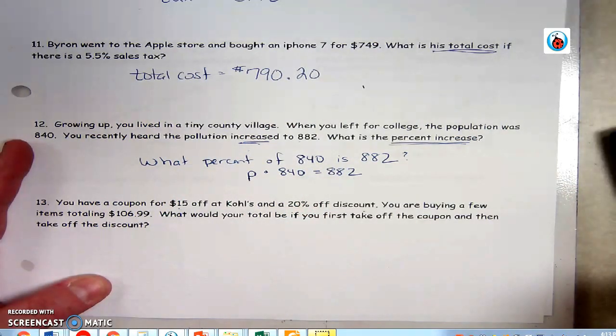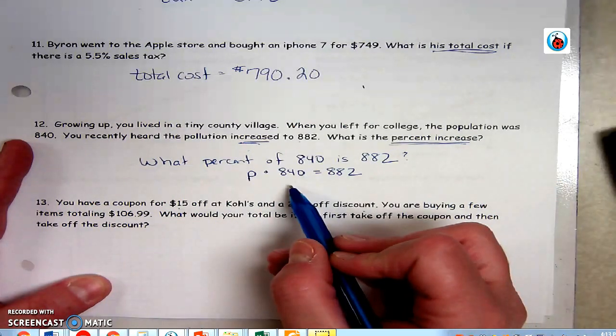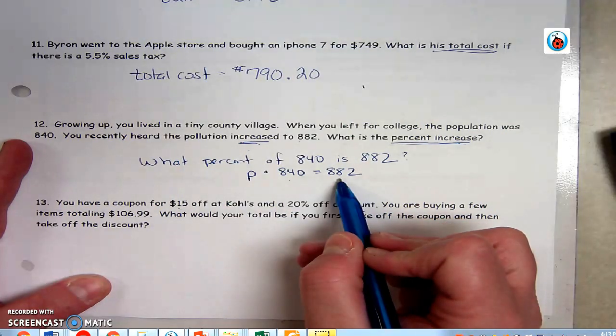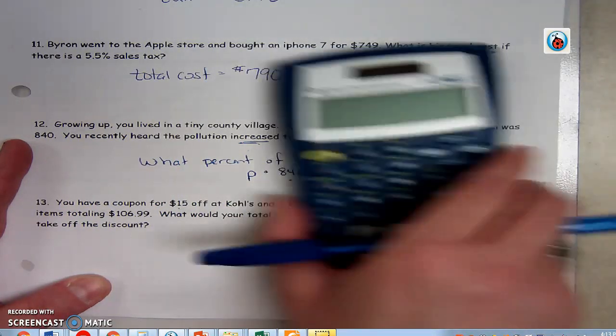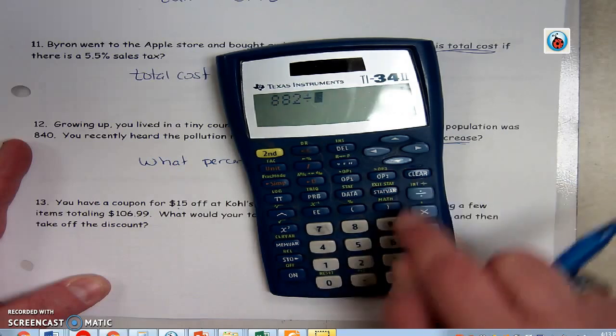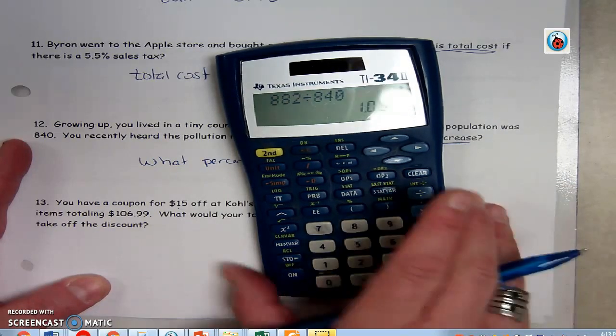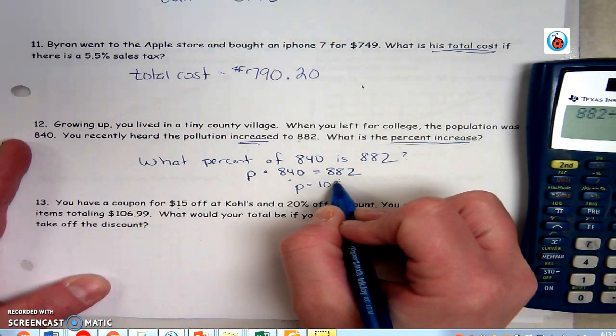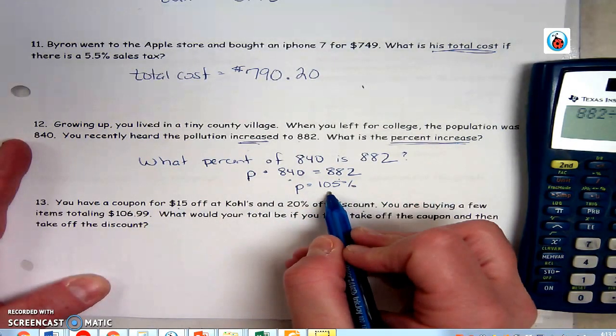So to find that percent, I'm going to divide. To find percent, you divide. So I'm going to divide 882 by 840. So 882 divided by 840 is 105. So the percent is 105. The new percent is 105.